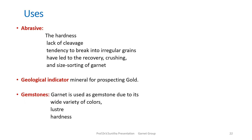Coming to the uses, garnets are used chiefly in the abrasive industry. Because of their hardness, lack of cleavage, and tendency to break into irregular grains, they have led to the development of crushing and size-sorting processes for garnet. These properties make garnet valuable in the abrasive industry. Garnet is also used as a geological indicator mineral for prospecting gold, and most varieties are used as gemstones due to their wide variety of colors — red, green, blue, orange, and yellow — as well as their good luster and hardness.